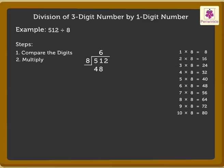Now, subtract 48 from 51, which is equal to 3. Next, we need to compare 3 and 8. Here, 3 is smaller than 8. So, we bring down the ones, that is 2 and get the number 32.